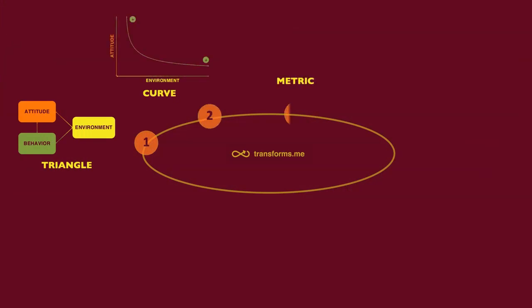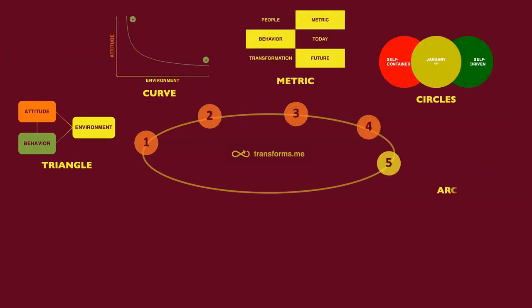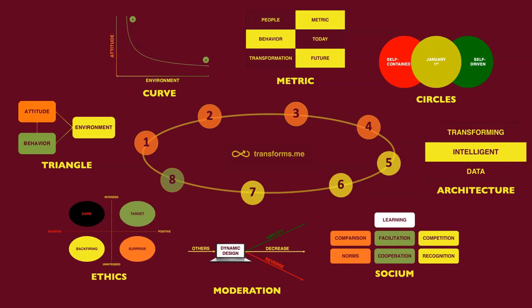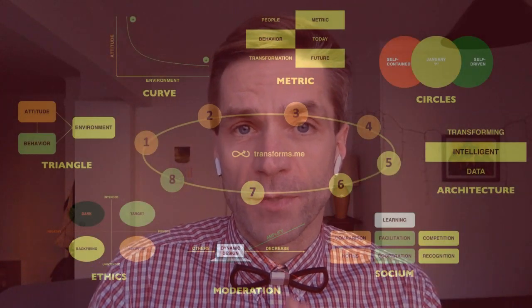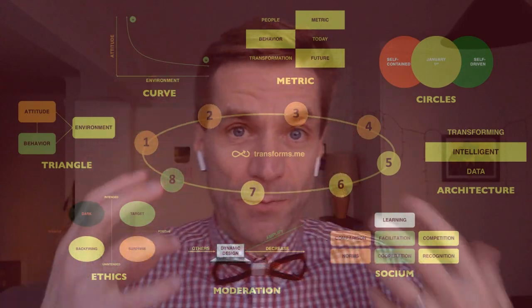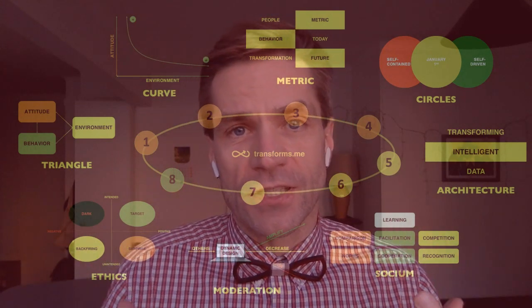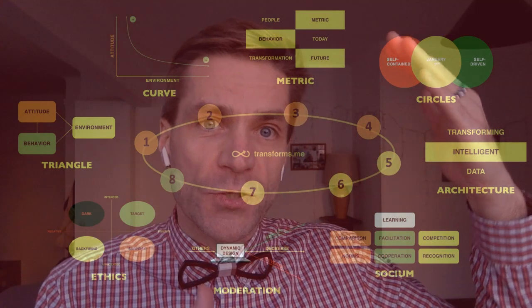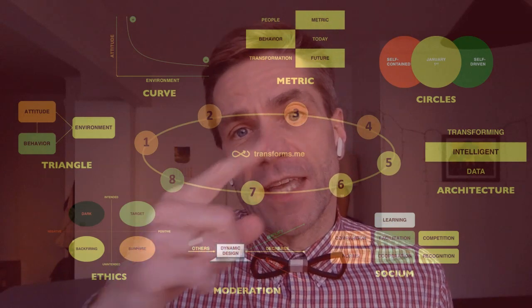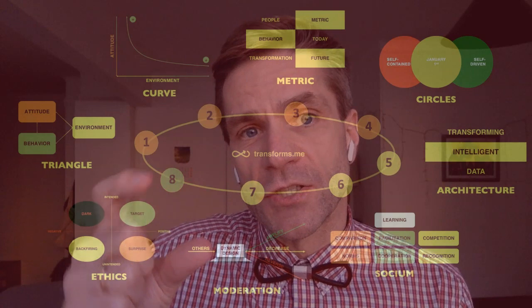Once we start implementing sustainable change — transformation — this framework has eight applicable tools. They combine deep social and behavioral sciences, simplified for organizational contexts. It starts with the triangle, from Albert Bandura at Stanford University, which explains the interconnection between what people think, what people do, and the environment. The next is the curve, which explains that attitude can be low or high, the environment easy or hard to change, and behavior happens when there is a good balance between attitude and environment.